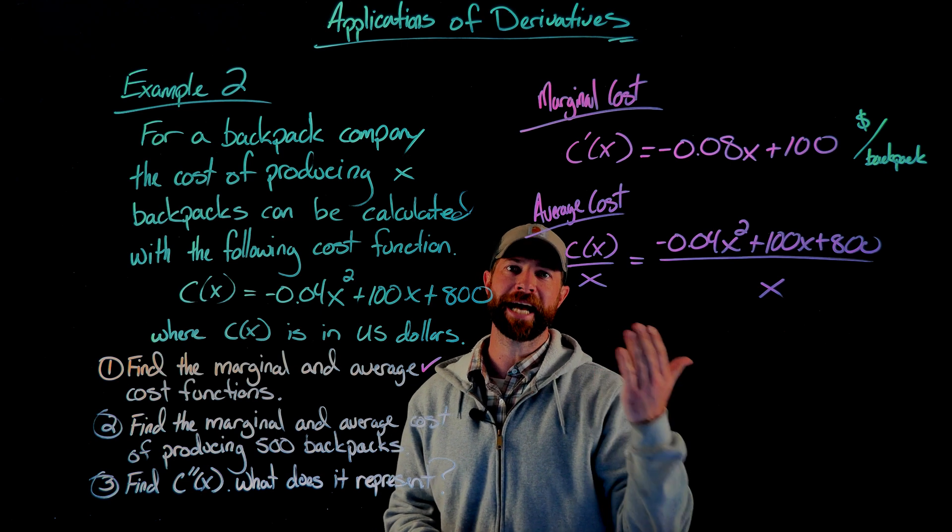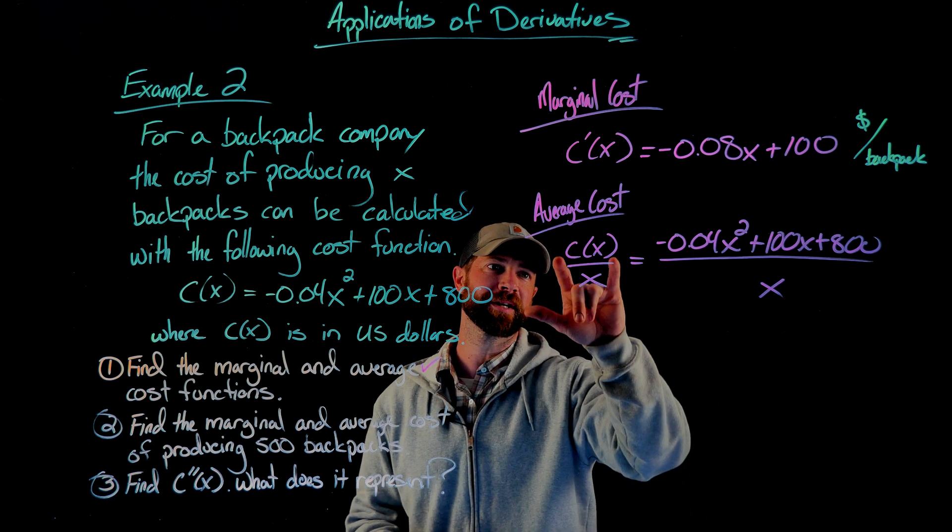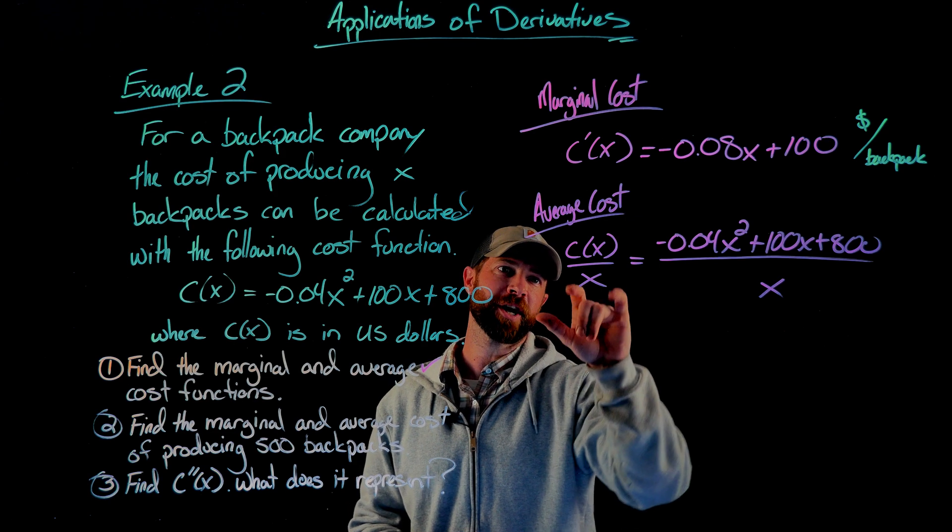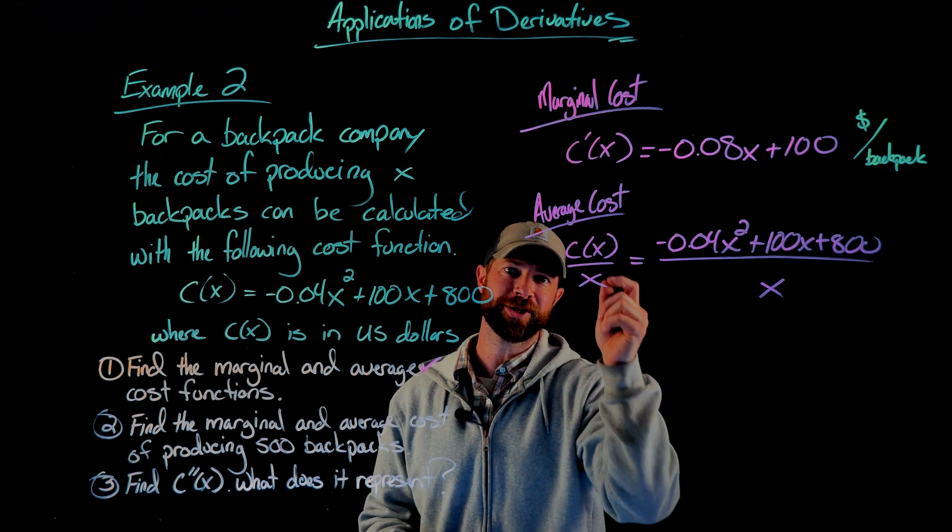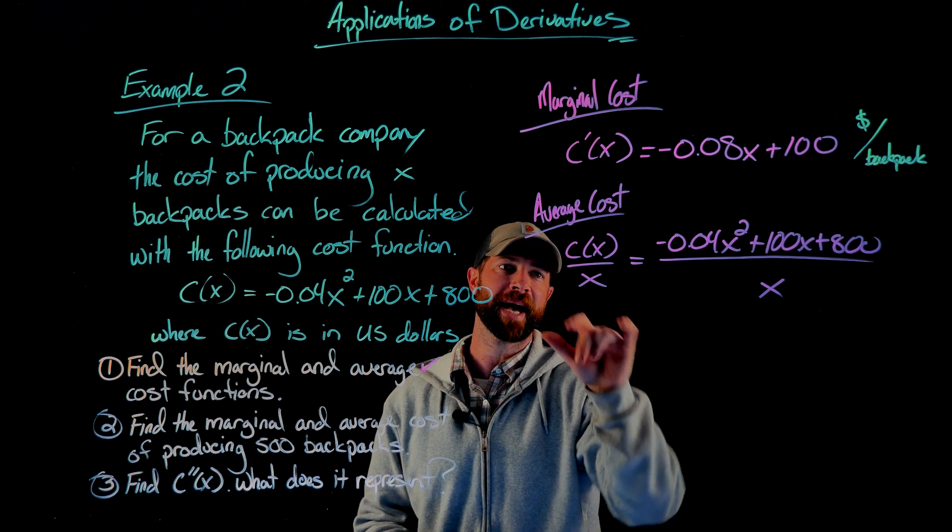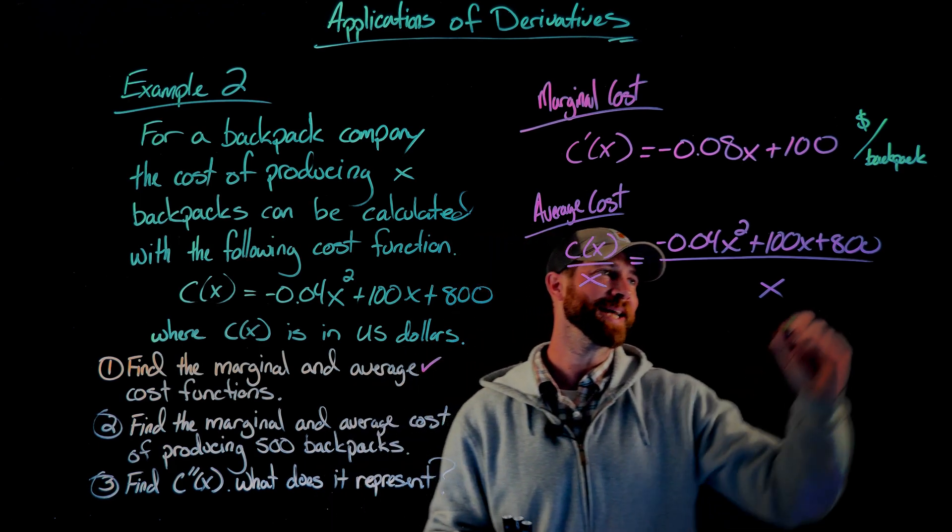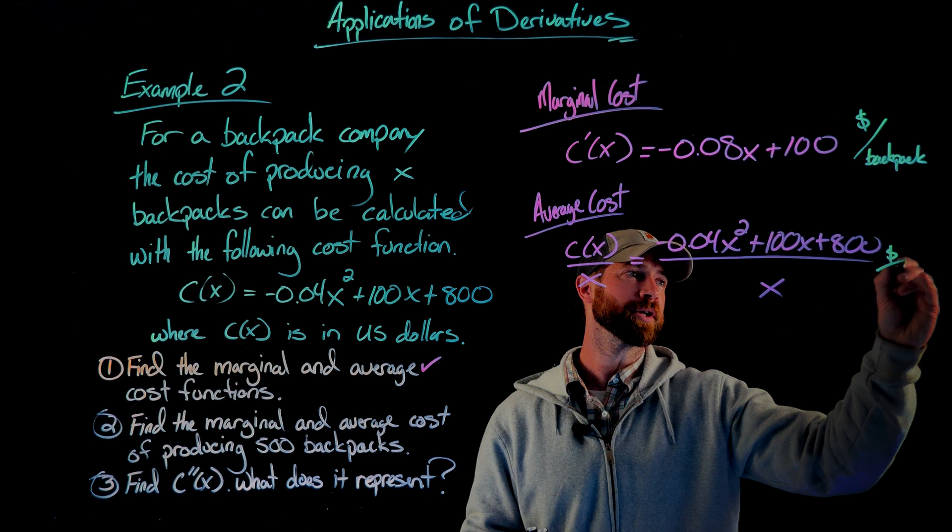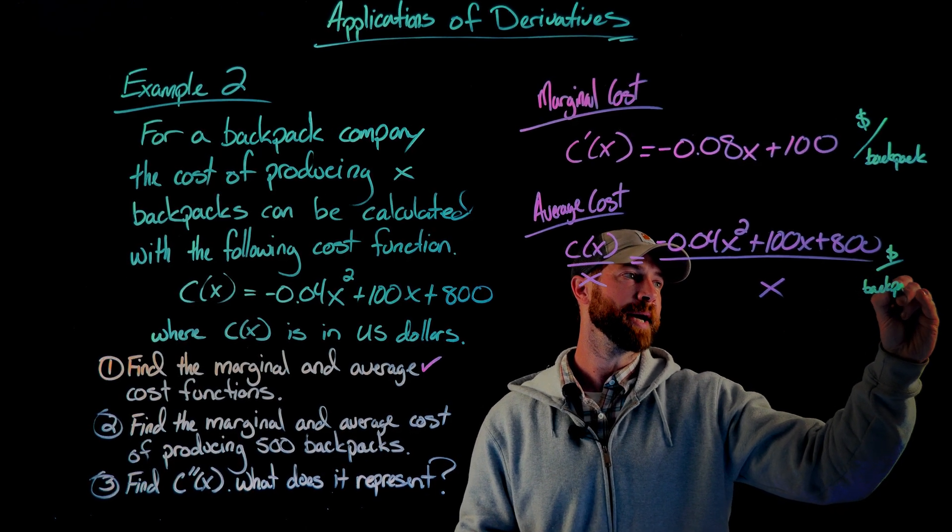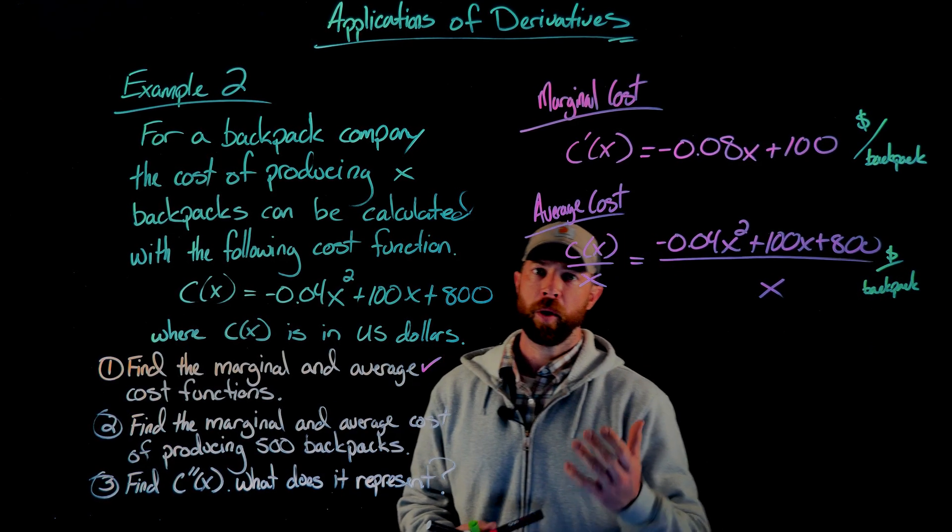Interestingly enough, the average cost function actually has exactly the same units. And you can see this pretty clearly. The way that we've defined the average cost function is we take the cost at a certain x value or a certain number of backpacks and we divide it by the number of backpacks. So literally by the way we defined that, the units will be dollars divided by the number of backpacks or dollars per backpack.